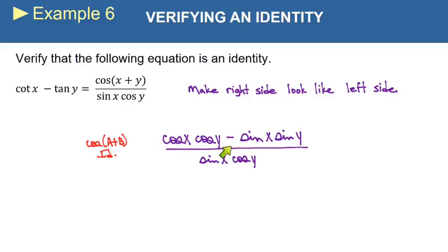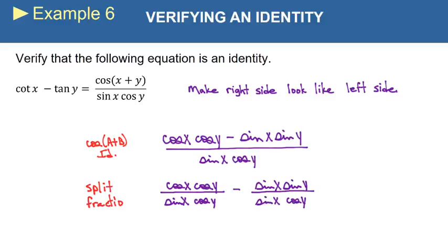Okay, now notice that our numerator contains two terms, so we can use our trick of splitting the fraction into two pieces. Notice that when I split the fraction, each new fraction gets the same denominator that the original expression had. And now these will simplify very nicely.